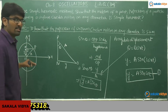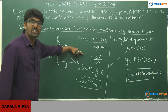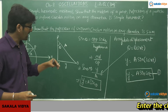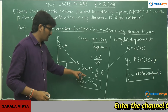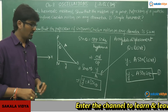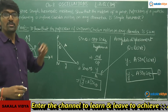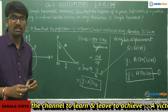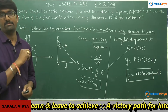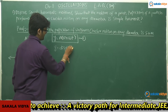So Equation 1 is y = a sin(ωt), where y is displacement. We have found the displacement equation. Next we need to find velocity, which is the rate of change of displacement. We differentiate Equation 1 with respect to time.